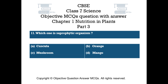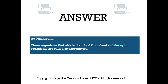Question number 11. Which one is a saprophytic organism? Option A: Cuscuta. Option B: Orange. Option C: Mushroom. Option D. The right answer is option C: Mushroom. Those organisms that obtain their food from dead and decaying organisms are called saprophytes.